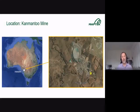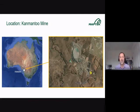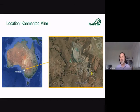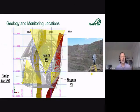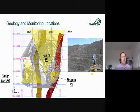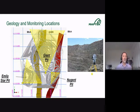Camantoo Mine is located just outside Adelaide. You can see three pits on the mine scale — the Giant Pit, the Nugent Pit where the failure took place, and Emily Star Pit — as well as tailings facilities around the mine site. Three scanners were set up to scan across those pit areas, giving a sense of the scanners' range.